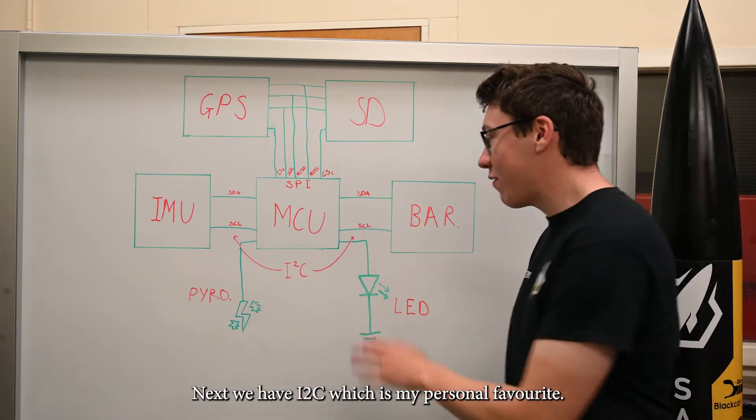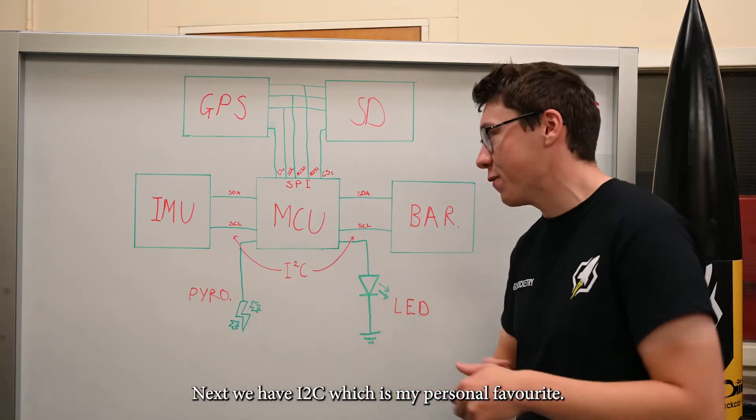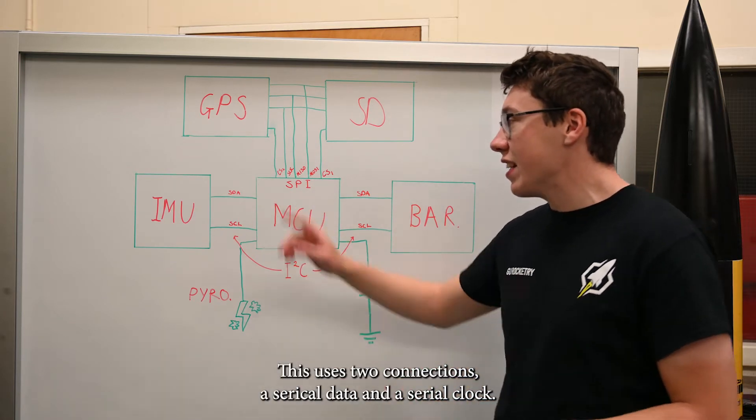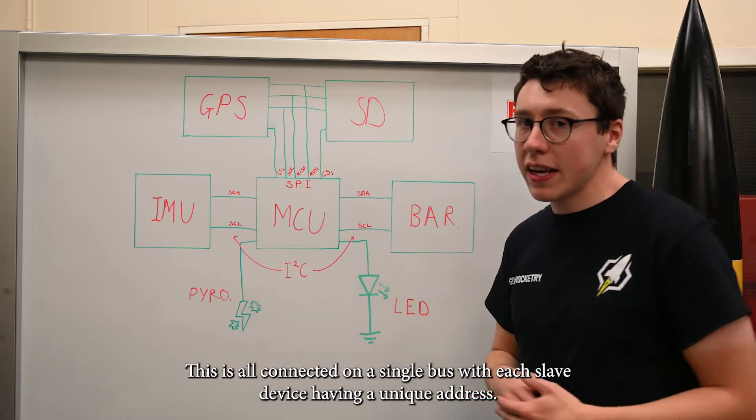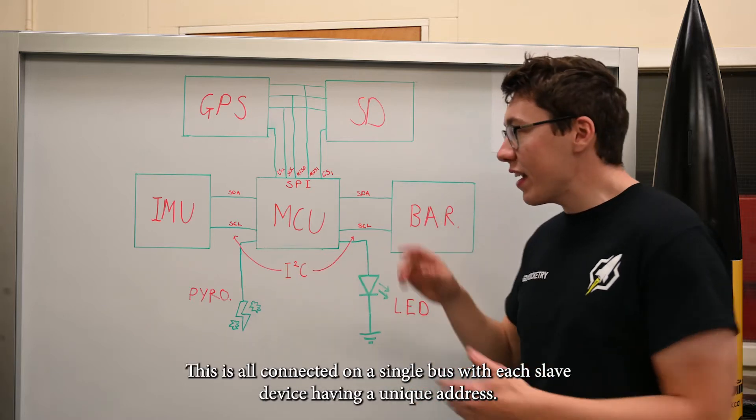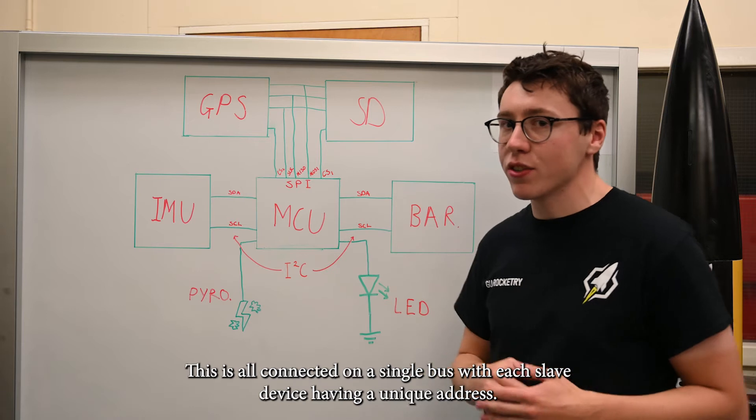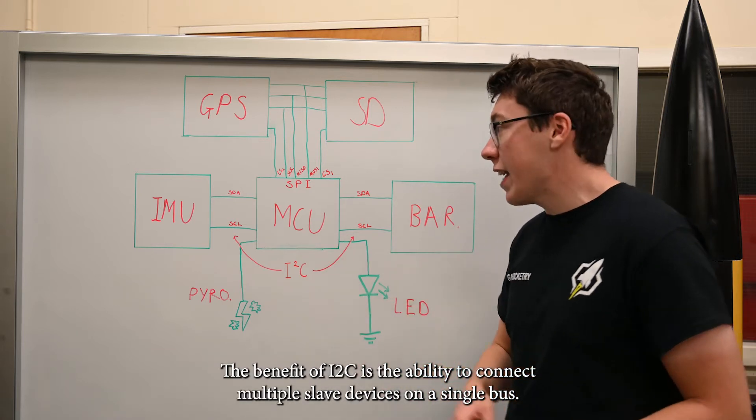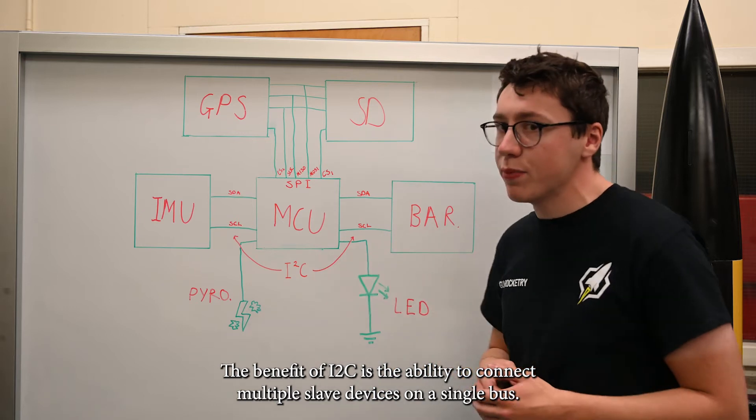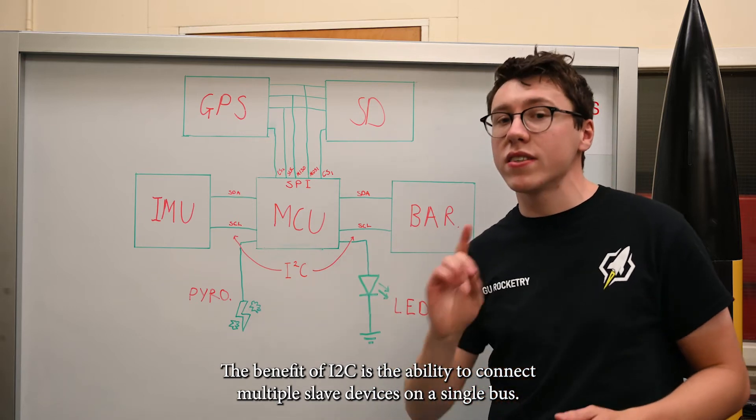And next we have I2C, which is my personal favorite. This uses two connections: a serial data and a serial clock. These are all connected on a single bus with each slave device having its own unique address. The great benefit of I2C is that it allows multiple slave devices to be connected up just using one singular bus.